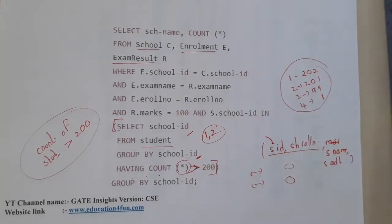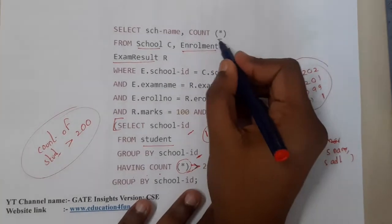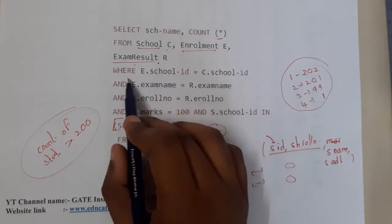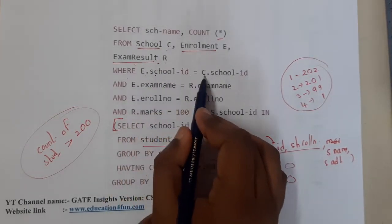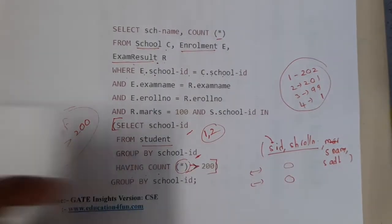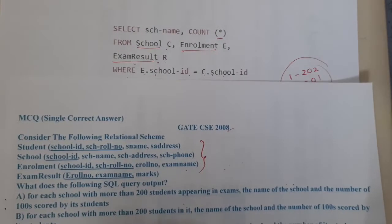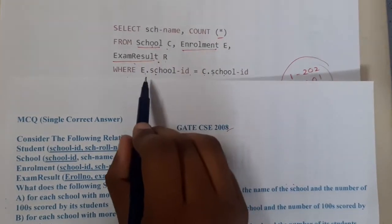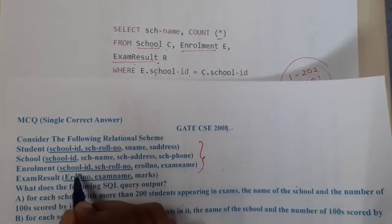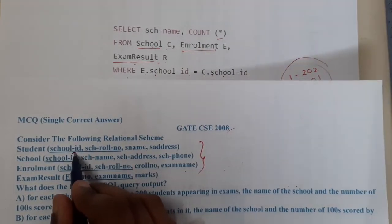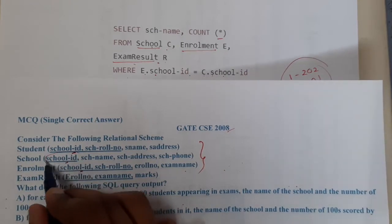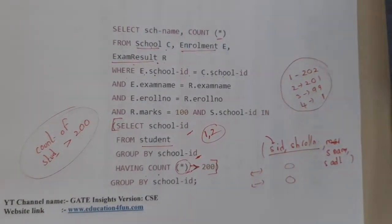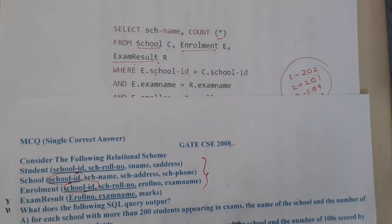Now in the outer query, we are selecting school name and counting something from school C, enrollment E, and exam result R. We check where the school's school ID equals C dot school ID, and also compare enrollment school ID with school ID, joining those tables together.